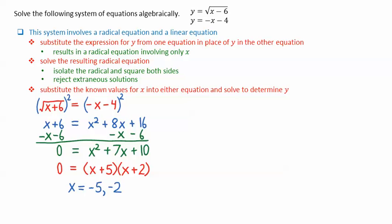We have to substitute these values in order to determine if either one of them is extraneous. For x equals negative 5, the left side of the equation gives 1. Note we're plugging in negative 5 plus 6 to get the square root of 1, which is equal to 1.